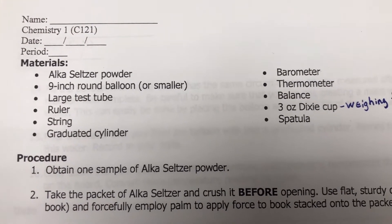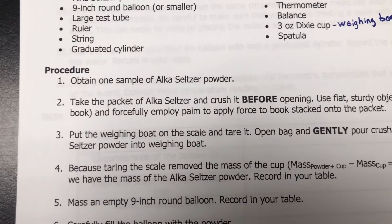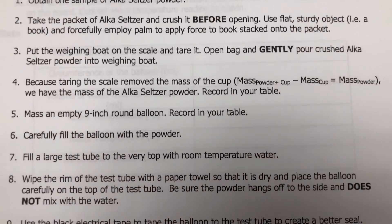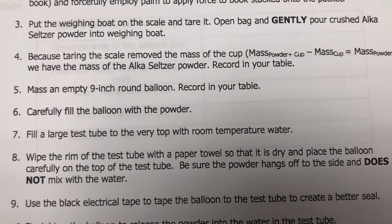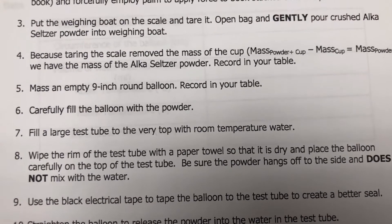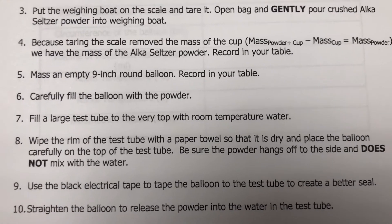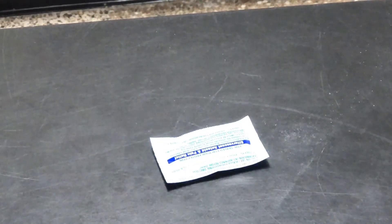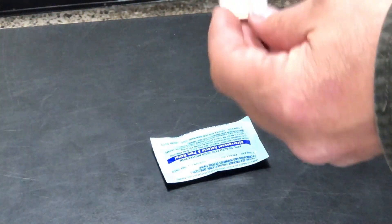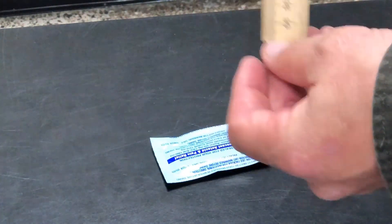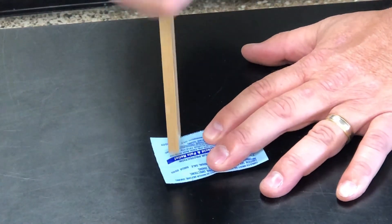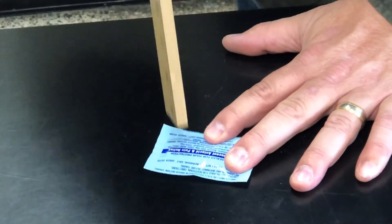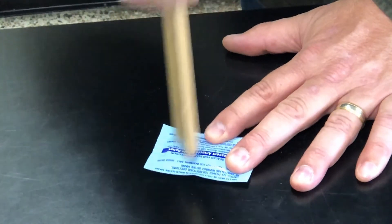We've got our equipment ready. We're going to get our Alka-Seltzer powder. We're going to crush it. I know the instruction says to use the book, but we're going to use the end of the meter stick, the one that we don't measure from. We're going to use this to crush the material, trying carefully to not open this bag.